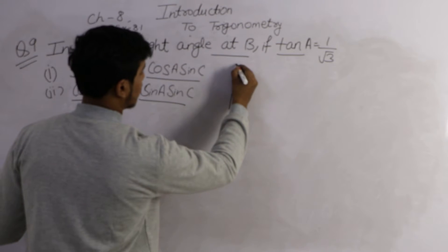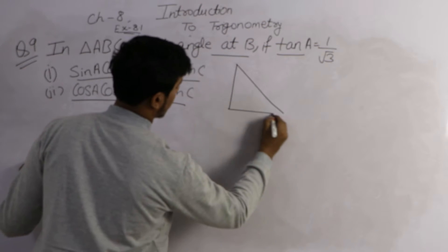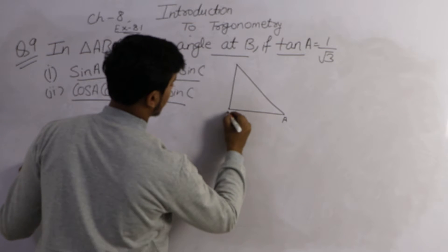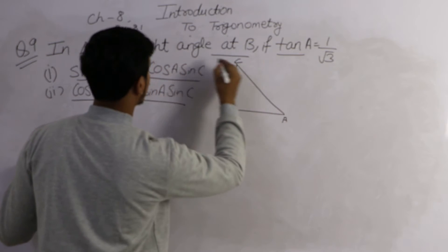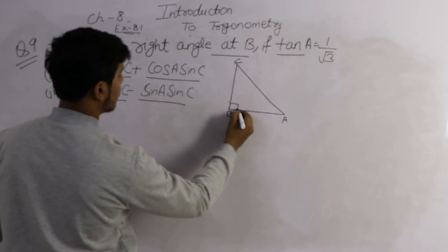First draw a triangle, triangle ABC, because it is said that right angle at B.